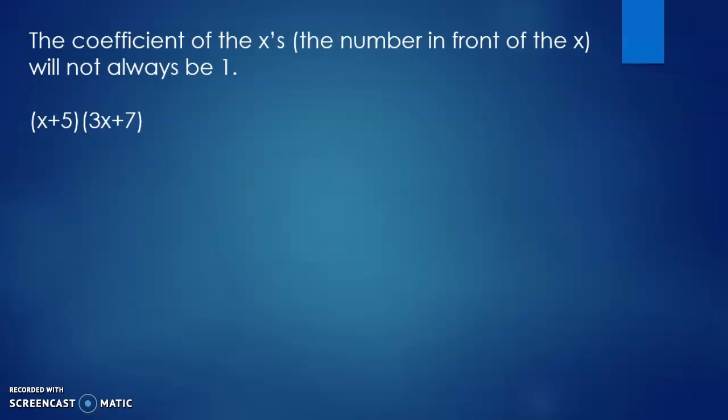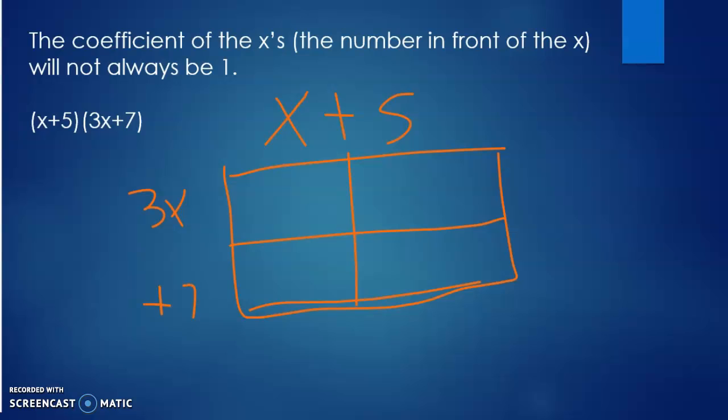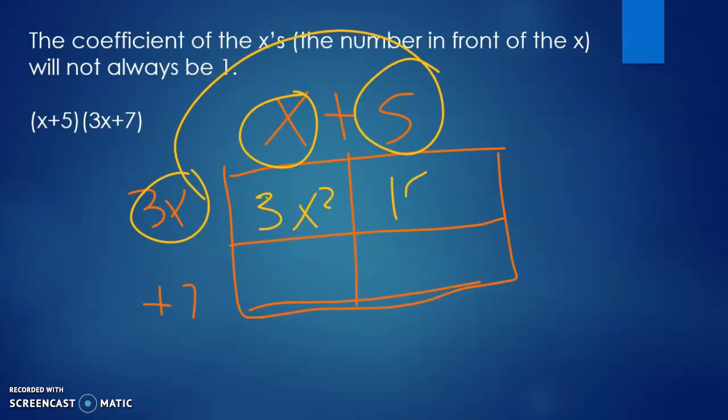Okay, so again, doing the Punnett square, I do x plus 5 down this one. Kind of a funky box. And then I do 3x and plus 7. So, the first one I do is x times, 3x times x, which is 3x squared. Then I do 3x times 5, which is 15x.